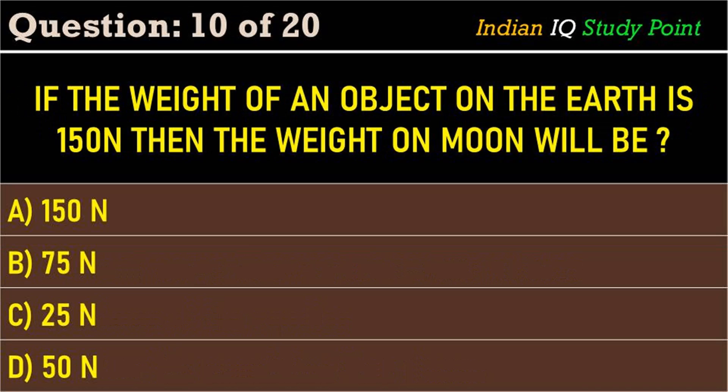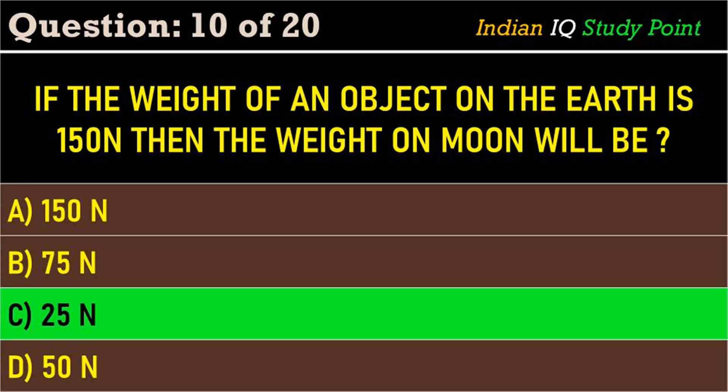Coming to the next question: if the weight of an object on the earth is 150 N, then the weight of that object on the moon will be — option A: 150 N. Option B: 75 N. Option C: 25 N. Option D: 50 N. The correct answer is option C: 25 N.